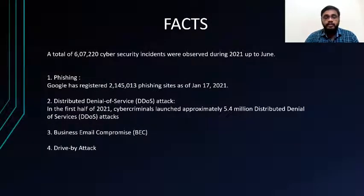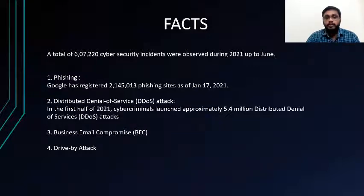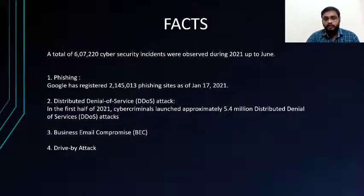Having discussed the different attacks in detail, Google resisted almost 20 million phishing sites on January 17, 2021. In the first half of 2021, cybercriminals launched approximately 5.4 million DDoS attacks. This is only the first half — the second half would make it almost double.